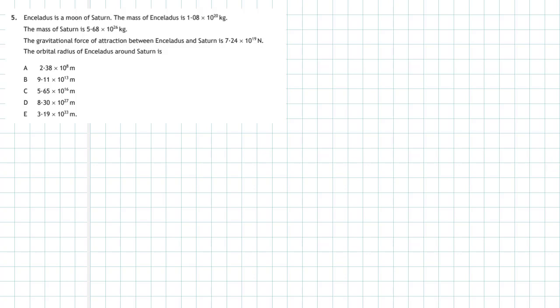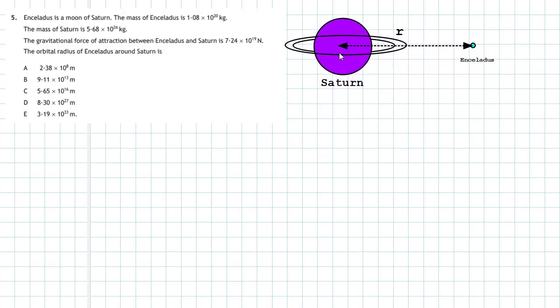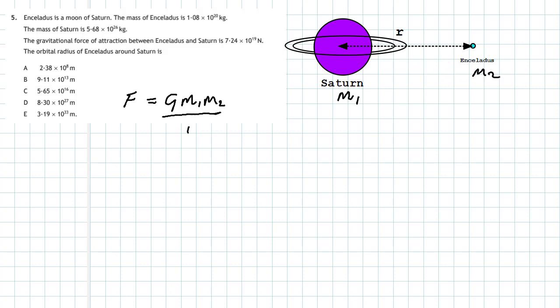Our job is to find the orbital radius of Enceladus around Saturn. A moon is an object which orbits around another planet, so Enceladus is orbiting around Saturn. To do this we use Newton's law of gravitation: F equals G, the universal gravitational constant, times M1 (Saturn) multiplied by M2 (Enceladus), divided by the radius between the two planets squared.